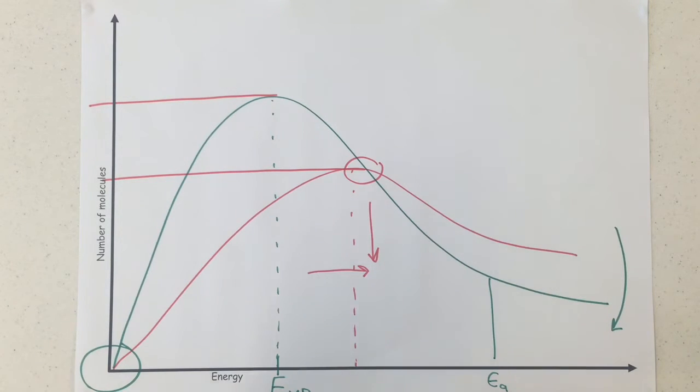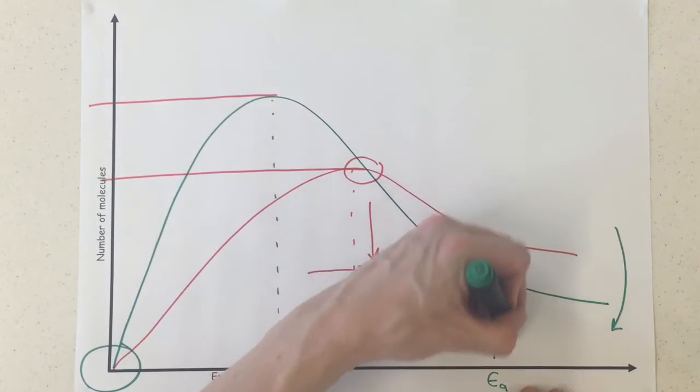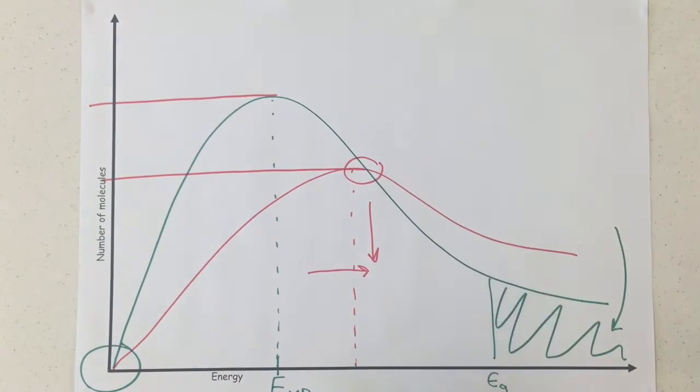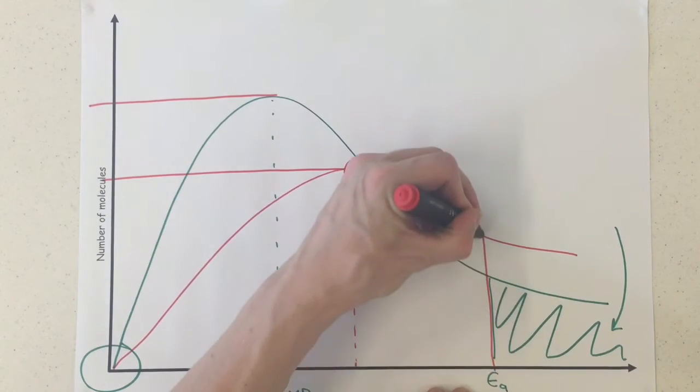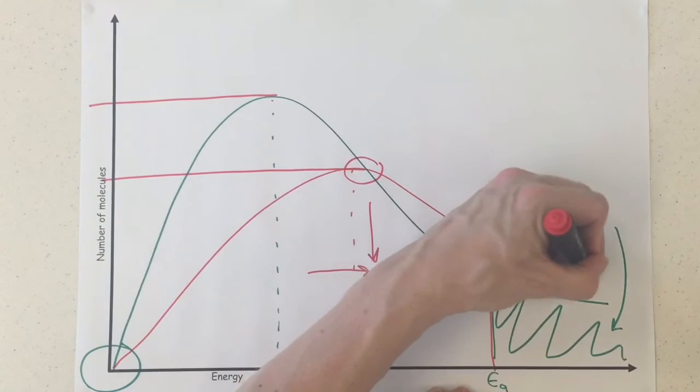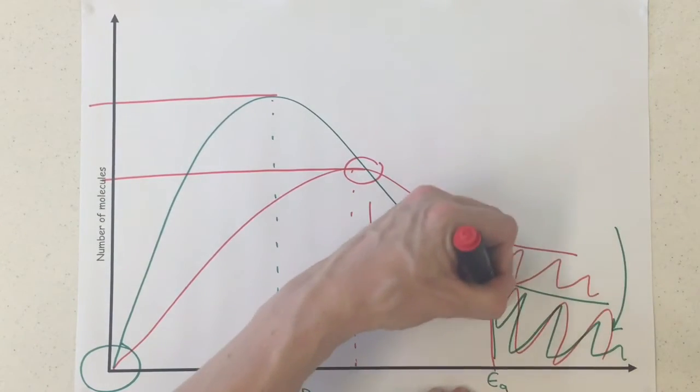Now what that meant was on our original lower temperature curve before, we had all of these molecules were able to react upon collision. Now under the higher temperature, the activation energy is still in the same place, but it now includes all of these, as well as all of those.